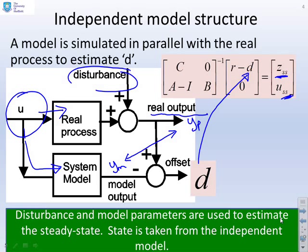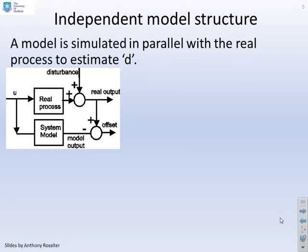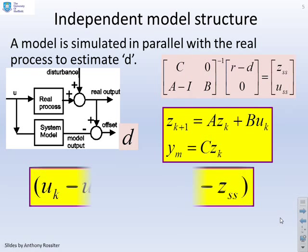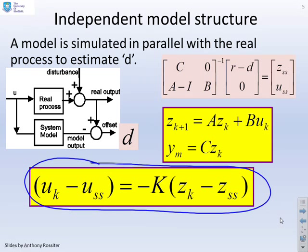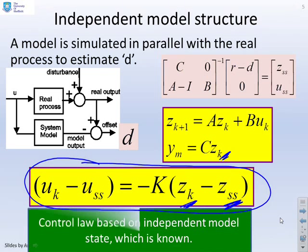The disturbance and model parameters are used to estimate the steady state, but the key thing is this steady state is for the independent model. Therefore, because we know the states of the independent model, we've no longer got any uncertainty in our predictions. The model is simulated in parallel with the real process to estimate d. The control law is built upon the model states: k(z - zss), where z, the state of the independent model, is something that is known exactly, because the actual state of the process is unknown.